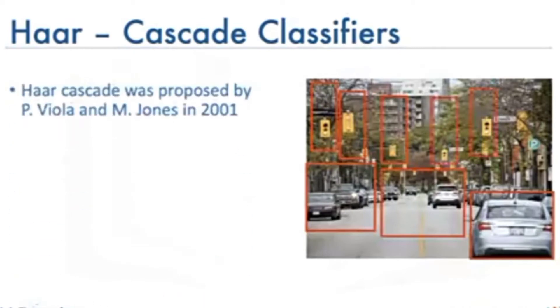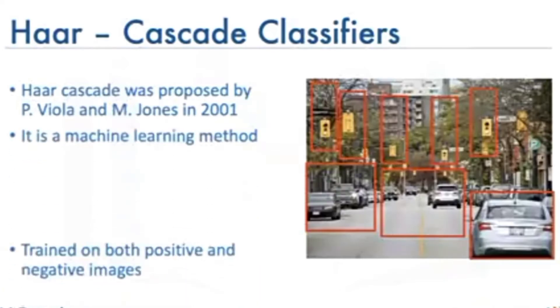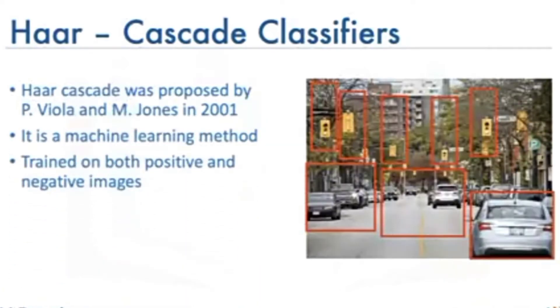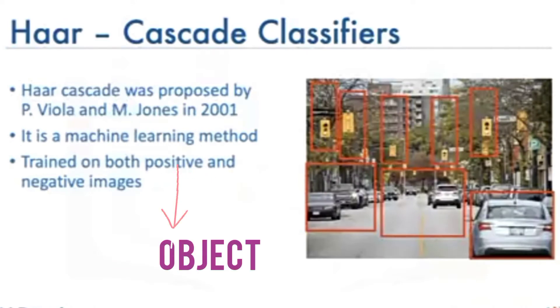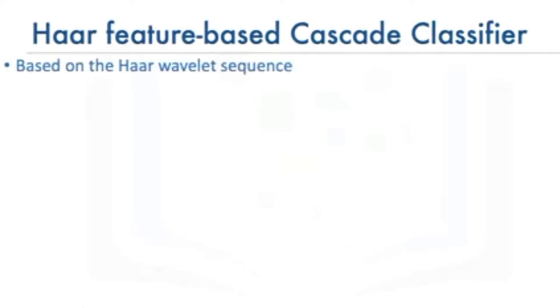The method was proposed by P. Viola and M. Jones in 2001. It is a machine learning method where a cascade function is trained on a large number of positive images — which means images that include the object we are trying to detect — and negative images, that is, the background. Paul Viola and M. Jones used the idea of HAR wavelets in the HAR feature classifier.